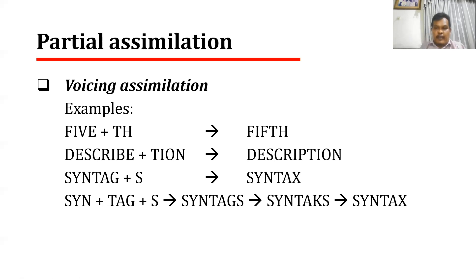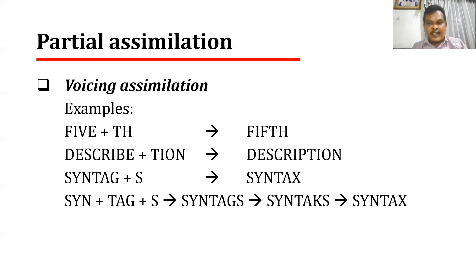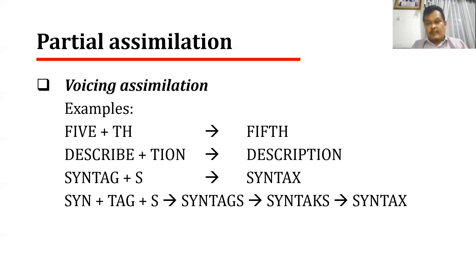To compare: in total assimilation, the final sound is changed into the sound which is identical with the initial sound that comes after. However, in partial assimilation, the change does not result in an identical sound, but in a sound which has similarity in terms of place of articulation. This is partial assimilation in the form of voicing assimilation.